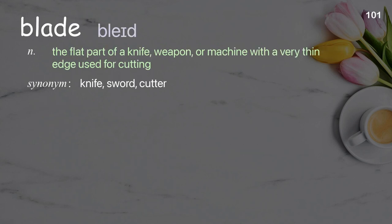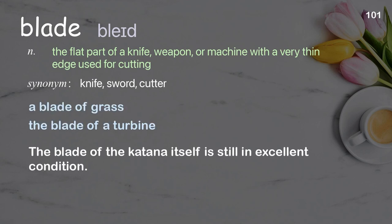Blade. The flat part of a knife, weapon, or machine with a very thin edge used for cutting. Examples: a blade of grass, the blade of a turbine. The blade of the katana itself is still in excellent condition.